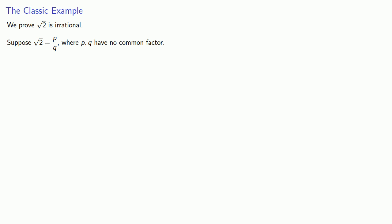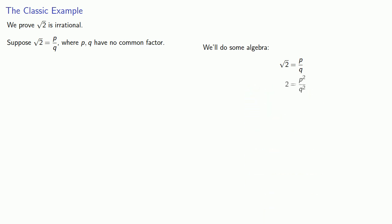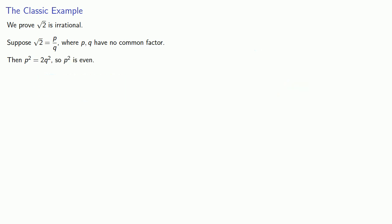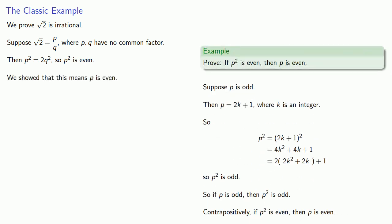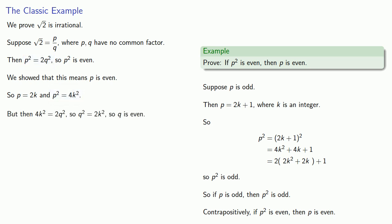We'll do some algebra. Square root of 2 equals p divided by q allows us to rewrite this as p squared equals 2 times q squared. That tells us that p squared is even. We've already shown that if p squared is even, then p has to be even. The fact that p is even means p equals 2k, so p squared equals 4k squared. But then 4k squared equals 2q squared, so q squared equals 2k squared, and therefore q must also be even.